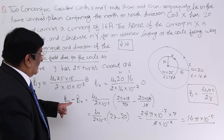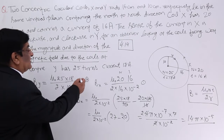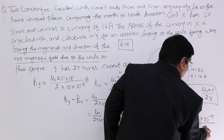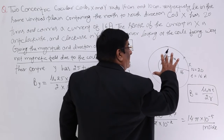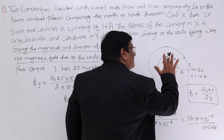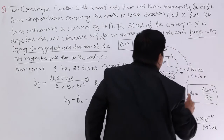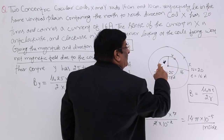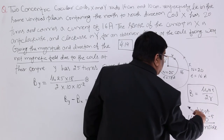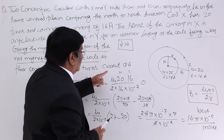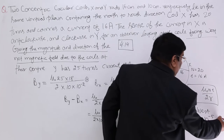By is larger than Bx and By is directed inward. The observer is facing west, so this inward direction corresponds to the west direction. The net magnetic field is 14π×10⁻⁵ Tesla directed towards the west. Since everything is in SI units, the unit of magnetic field is Tesla.